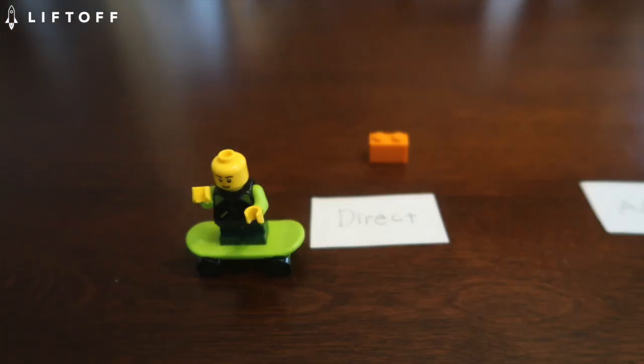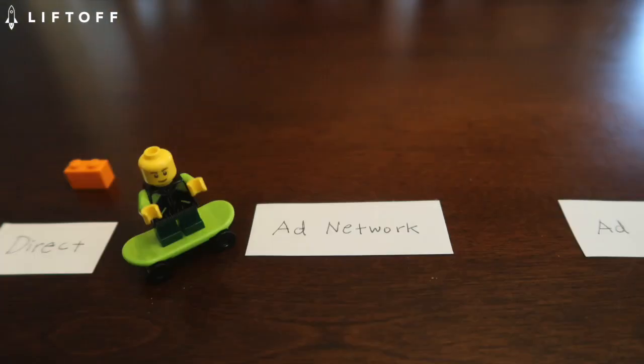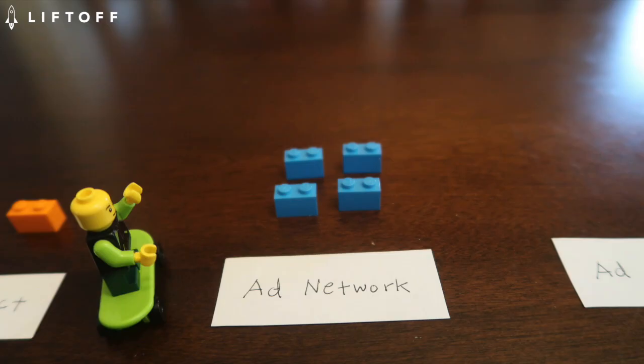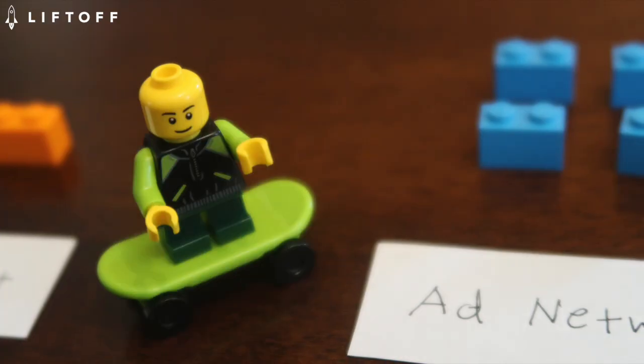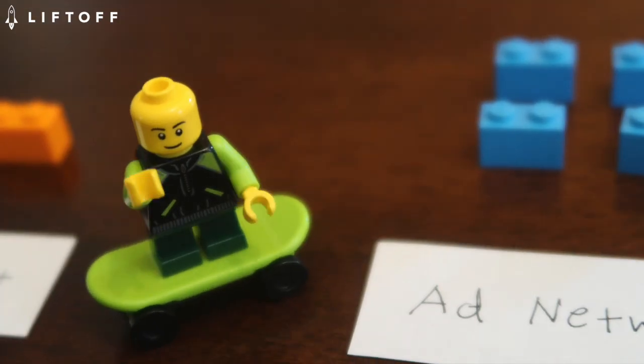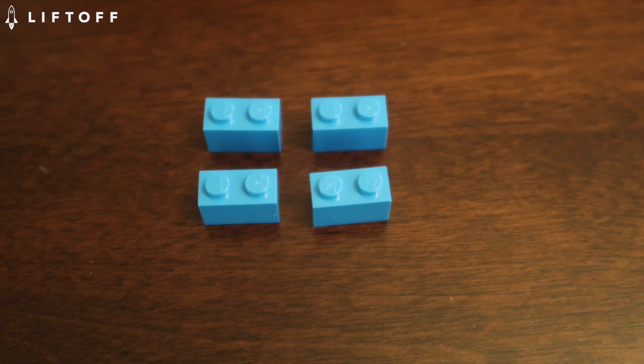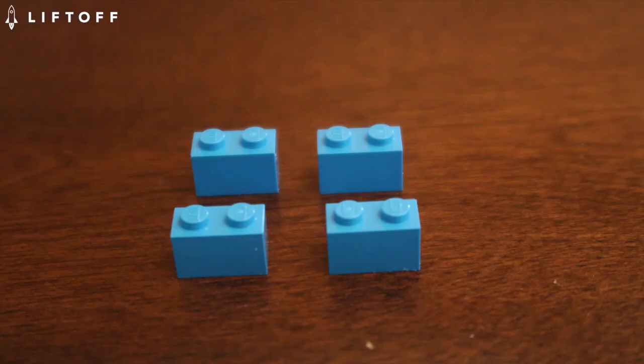Next you have ad networks. An ad network is a company that aggregates apps by category. This could be by vertical or by region. This is great if you know what kind of apps you want to advertise in. The downside is also scale. You're only reaching a subset of apps out there. You're also paying a fixed price to show ads for each subset.